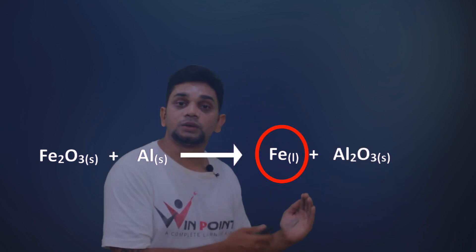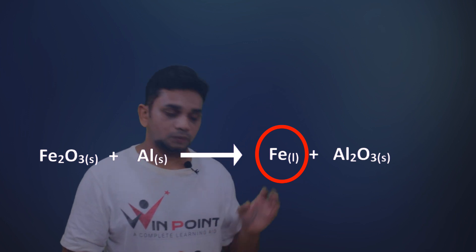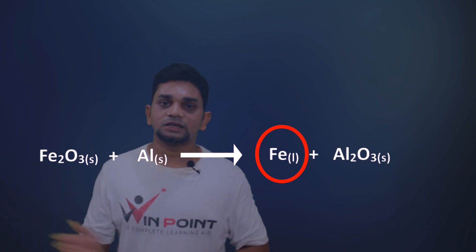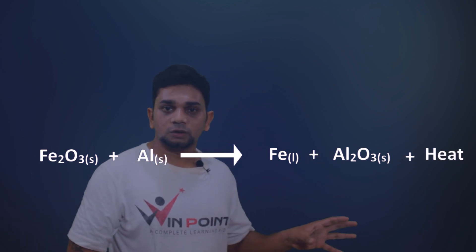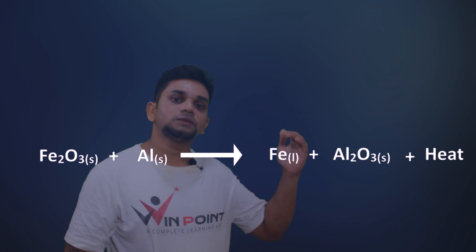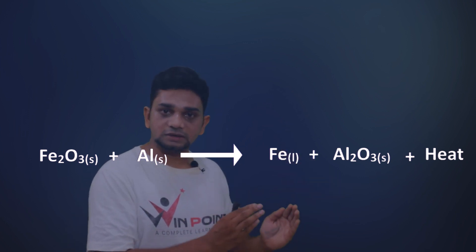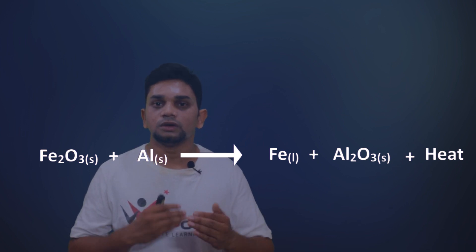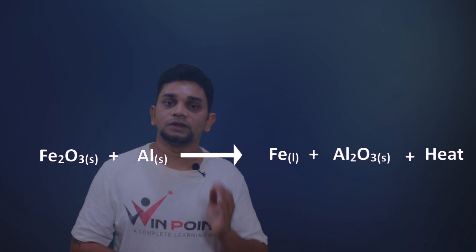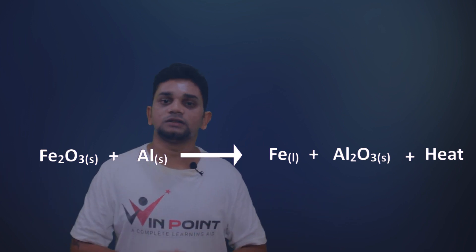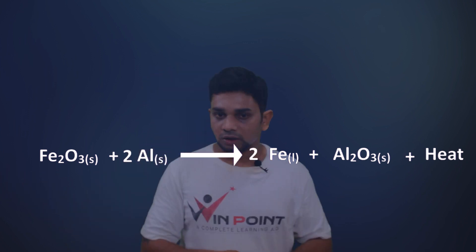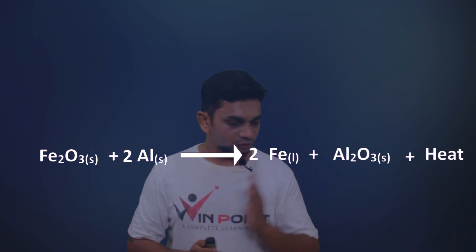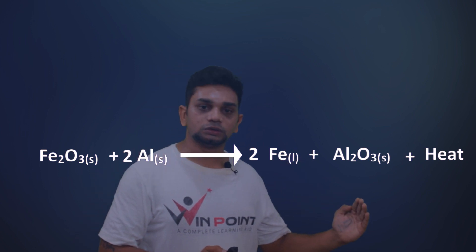The iron produced is in liquid (molten) form because this reaction is highly exothermic — a large amount of heat is produced, which melts the iron. Because of this molten iron, the thermite reaction is used to join railway tracks. The balanced equation is: Fe₂O₃ + 2Al → 2Fe + Al₂O₃ + heat.